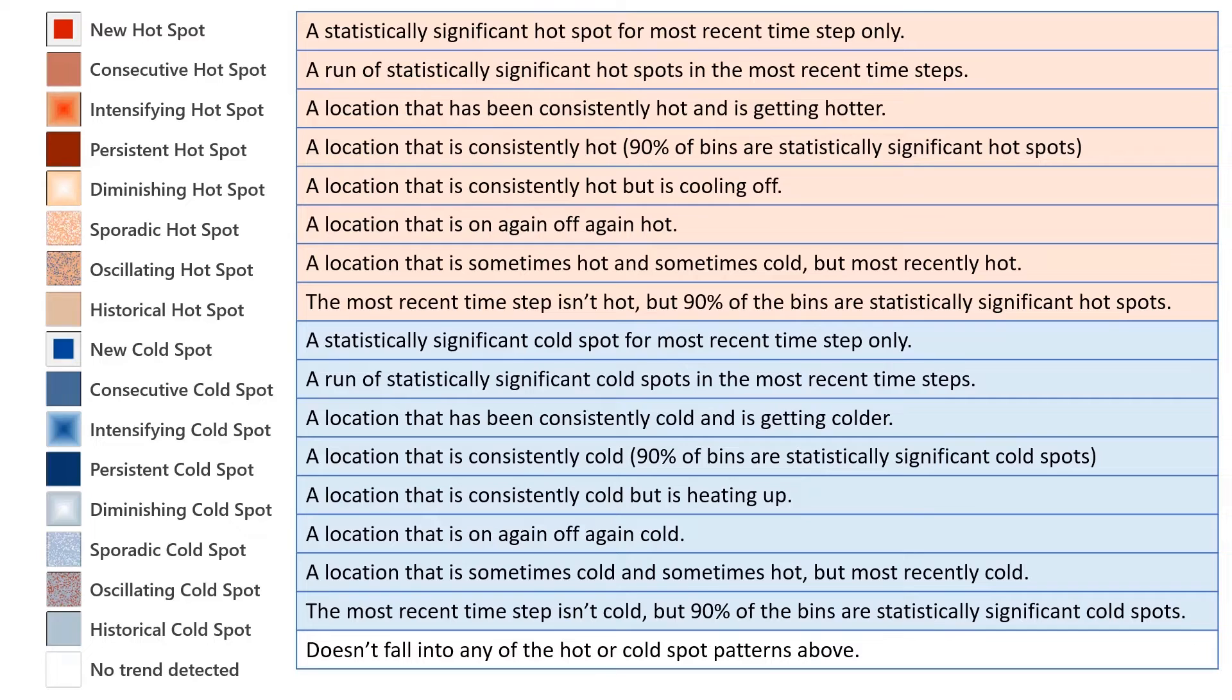For the COVID-19 data, for example, we'll probably want to focus on the new, consecutive, and intensifying hotspots. When we run the emerging hotspot analysis tool, we get a map showing if any of these 17 patterns were found in the cube columns. Let's run the tool and see what we get for the COVID-19 daily case data.